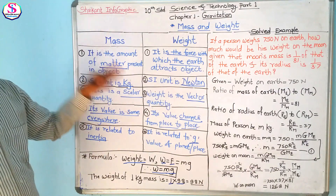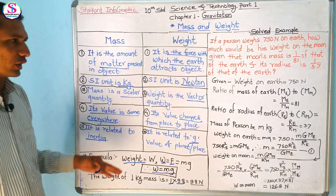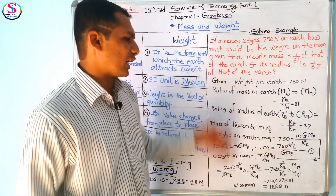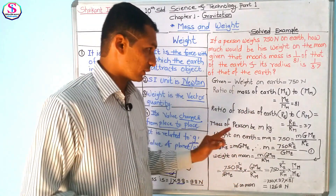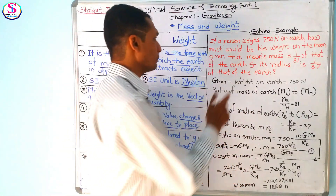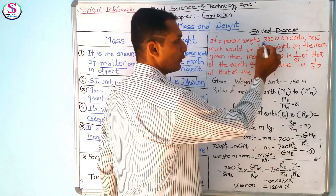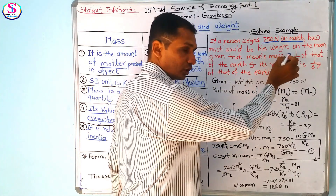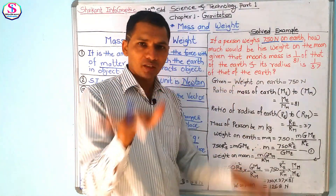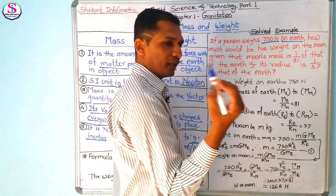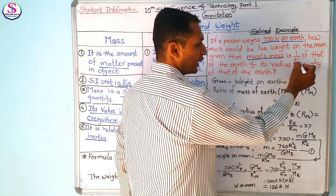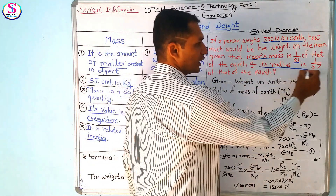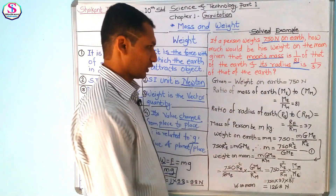This is all about the mass and weight concept. It's very easy to understand. Now there is one example given in the book. The problem is: if a person weighs 750 N on earth, how much would be his weight on the moon? Given values are: the moon's mass is 1/81 of that of earth, and its radius is 1/3.7 of that of the earth.